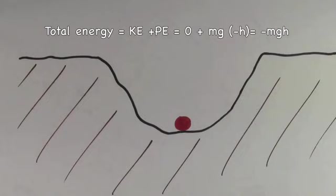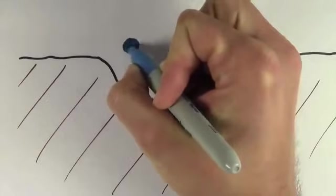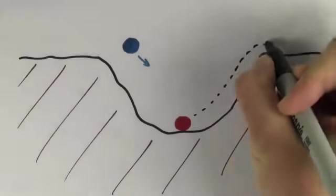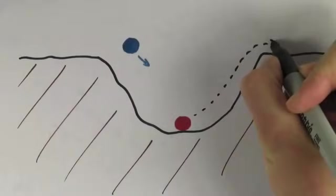Since this ball has a negative total energy, it's stuck and bound to the ditch. If someone could give this ball enough energy so that it would have positive total energy, the ball could leave the ditch. It would not be bound anymore.